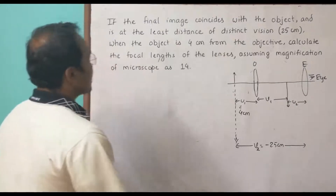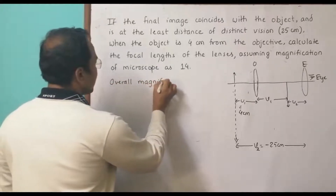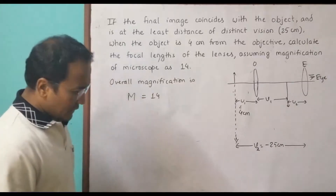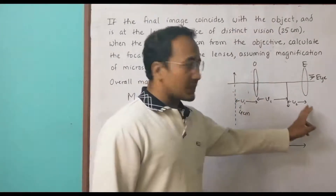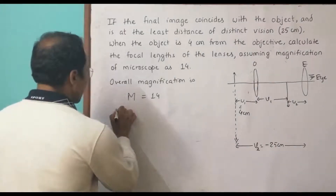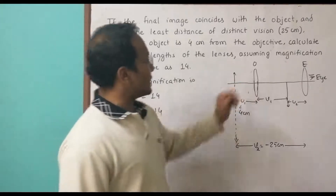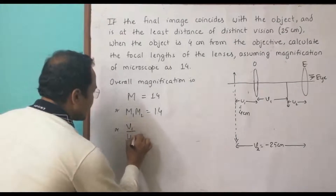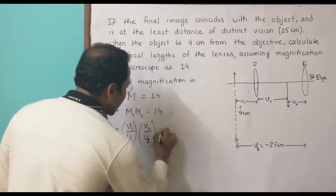The overall magnification of the device is M = 14. This equals the product of the magnification of the first and second lenses: M1 × M2 = 14. Writing M1 = V1/U1 and M2 = V2/U2, we get (V1/U1) × (V2/U2) = 14.